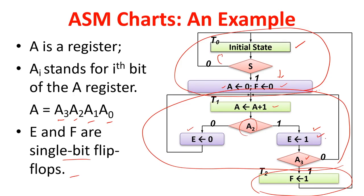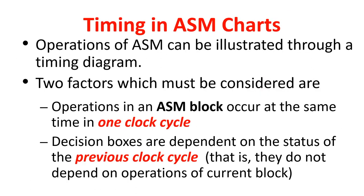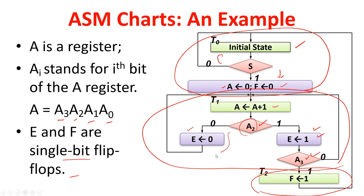The A2 checking and A3 checking happen in the same cycle, and based on the decisions they get executed. Operations in an ASM block occur at the same time in 1 clock cycle. There are 3 ASM blocks in this case: ASM block 1, ASM block 2, and ASM block 3.